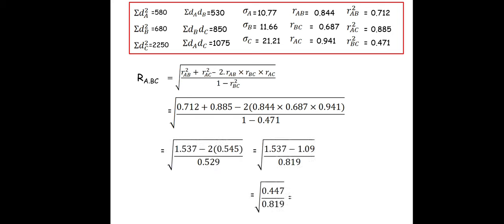Solving this gives a final result of R = 0.738. So 0.738 indicates a moderate association. This is how you calculate multiple correlation. I hope you found this video helpful, thank you for watching.